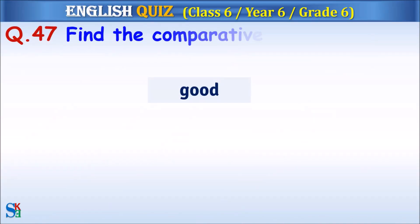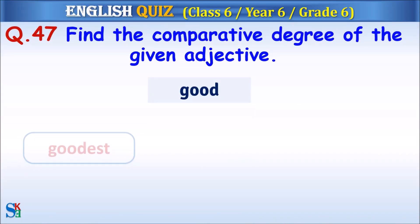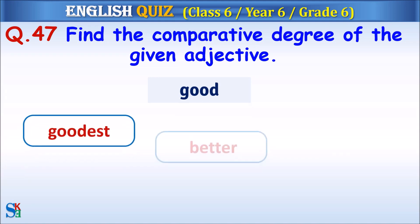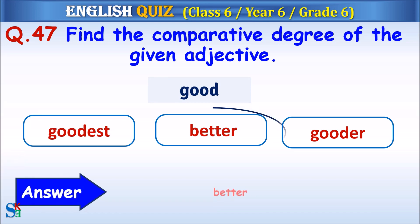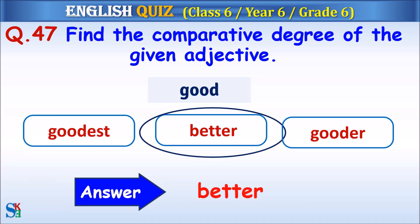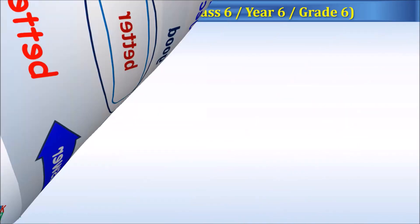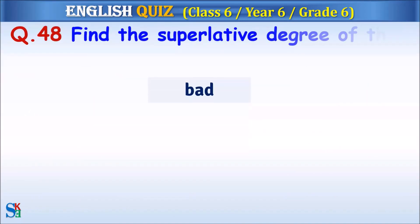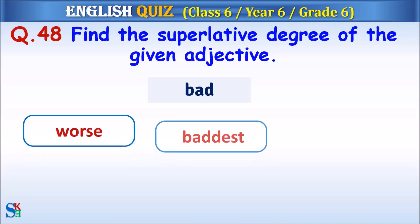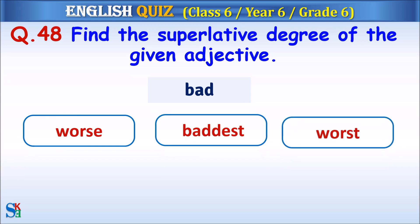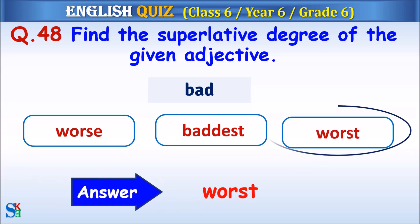Question 47: Find the comparative degree of the given adjective. The answer is 'better.' Question 48: Find the superlative degree of the given adjective. The answer is 'worst.'